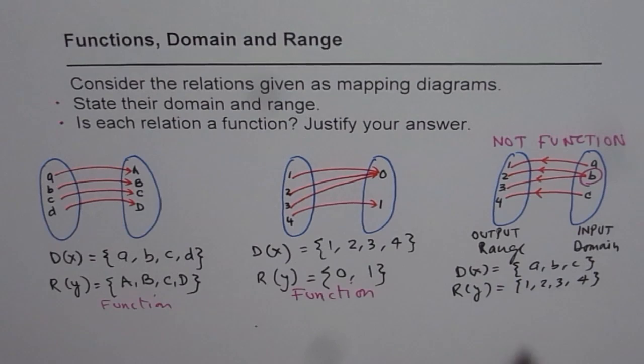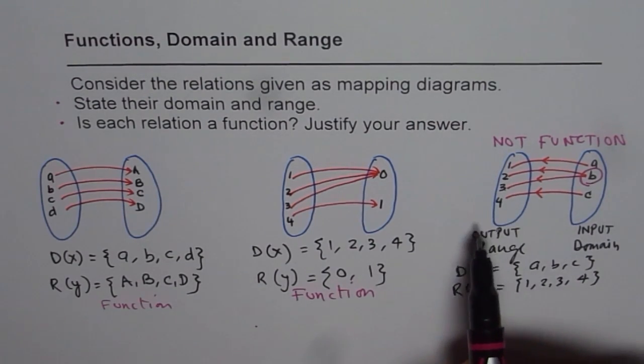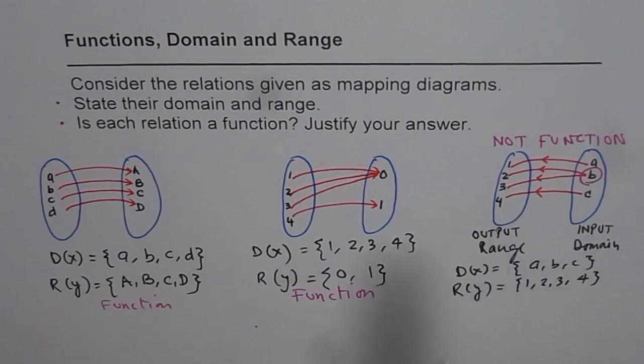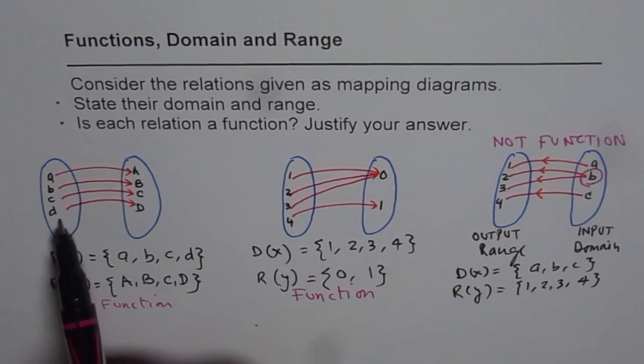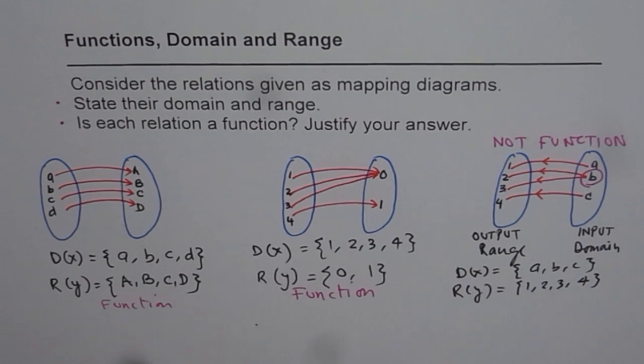That makes things very clear. So from the mapping diagram we should first see the direction of arrows. The arrows shoot from domain to range. So this is the domain, this is the range in these cases. Domain, range, and domain, range, do you see?